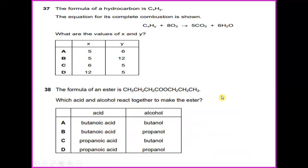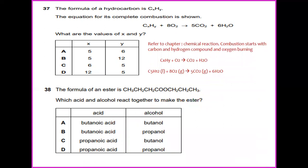The formula of the hydrocarbon is CxHy. The equation for its complete combustion is shown as CxHy plus 8O2 to produce 5CO2 plus 6H2O. What are the values of x and y? Refer to chapter chemical reactions combustion. Start with carbon and hydrogen compound and oxygen burning. CxHy plus 8O2 to produce 5CO2 plus 6H2O. So the answer will be 5 and 12.